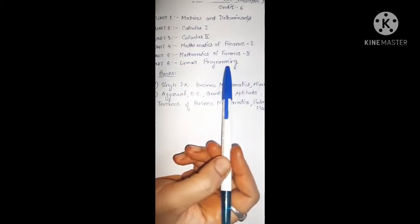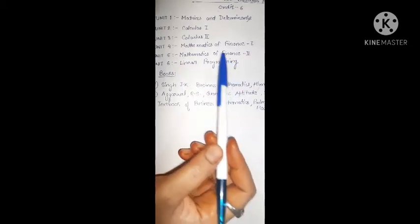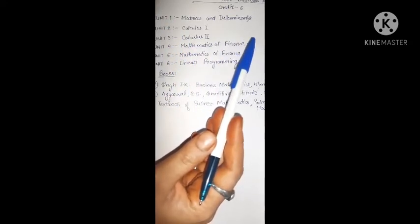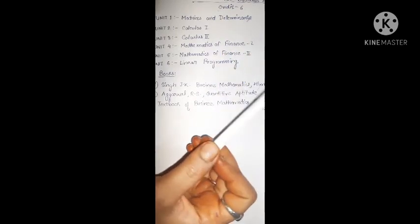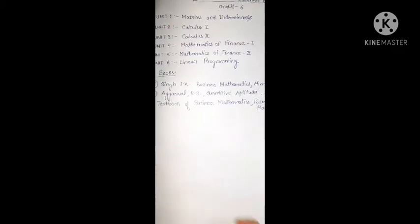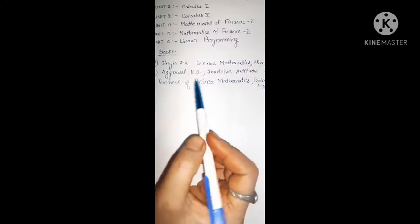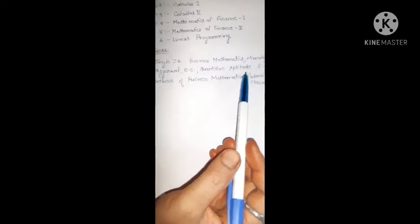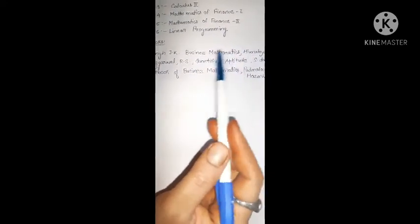Linear Programming, you are also familiar. Here you have to solve the equations, draw a graph, find out the solutions of the equations using linear programming. So these six units you have in your paper Business Mathematics, and the total marks for this paper is 100. Here are some books that I prefer for this paper. First one is J.K. Singh, Business Mathematics, and the publication is Himalaya Publishing House.